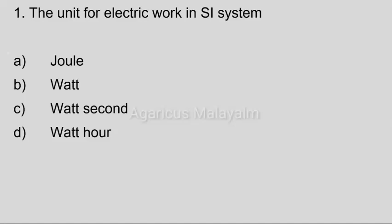First question: The unit of electric work in SI system. Answer options — Option A: Joule. Option B: Watt. Option C: Watt second. Option D: Watt hour. Correct answer: Option A, Joule.